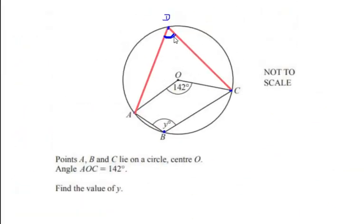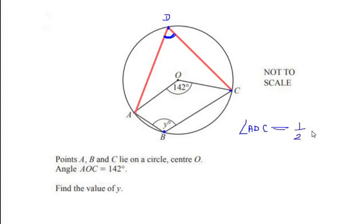Using this theorem, if we have an angle at the center of 142 degrees, then at the circumference, angle ADC is going to be half of 142 degrees, which gives us 71 degrees at the circumference.